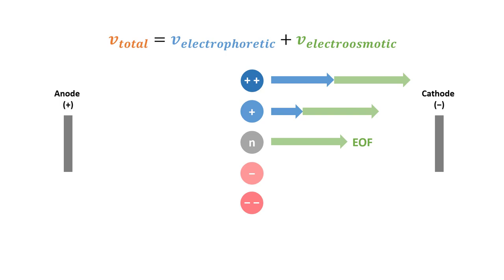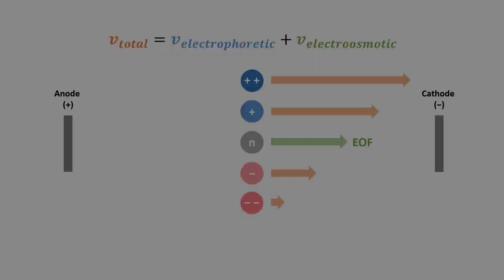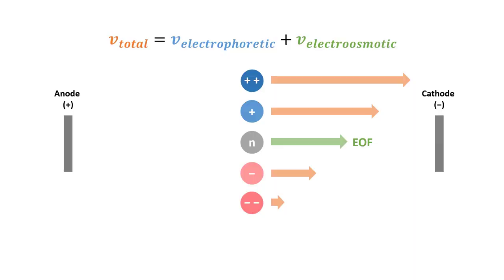For the anions, take note that the electrophoretic migration is in the opposite direction of the electroosmotic flow. However, the rate of electroosmotic flow is generally greater than the rate of electrophoretic migration of individual ions. Therefore, after combining both electrophoretic mobility and electroosmotic flow, both anions and cations will move towards the cathode with different migration rates depending on their ionic charge and Stokes radius.